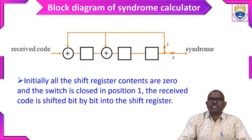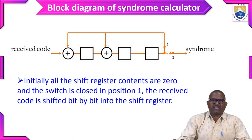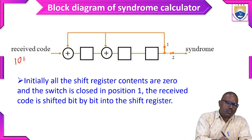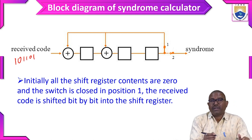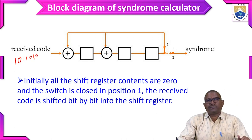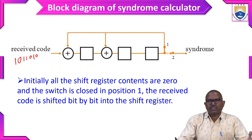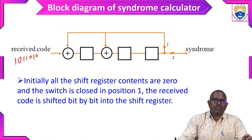Initially all the shift register contents are 0 and the switch is closed in position 1. The received code is shifted bit by bit into the shift register. The received code may be something like 1, 0, 1, 1, 1, 1, 0. For n equal to 7, the received code enters into the syndrome calculator, which then finds at what position the error has been generated.